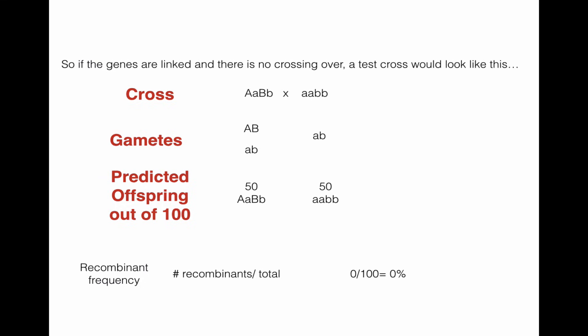Now, if the genes are linked and there's no crossing over, this is what a test cross would look like. So here is the genotype of the one we just looked at on the previous slide, and we're going to cross it with a completely recessive individual. Whenever you do this, it's called a test cross. So this individual can make two different gametes, big A, big B, or little A, little B.